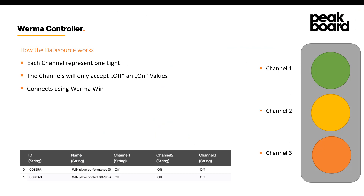Now let's talk about our VermaSource. Each channel represents one light. So if you have three channels, like in our case, you have three lights. If you have four channels, you have four lights. These channels will only accept on and off values, which are case sensitive. The whole thing connects via VermaVin.